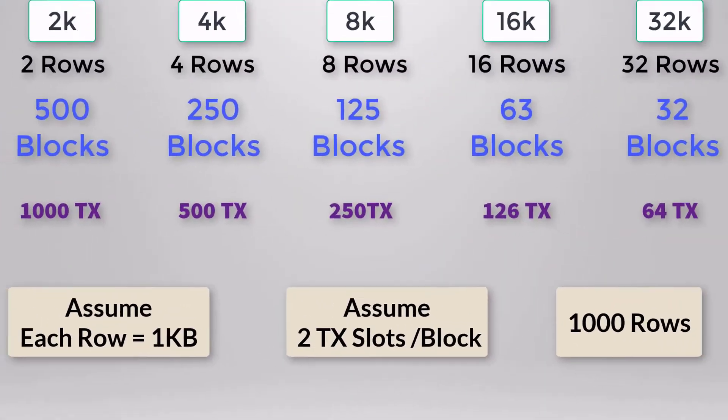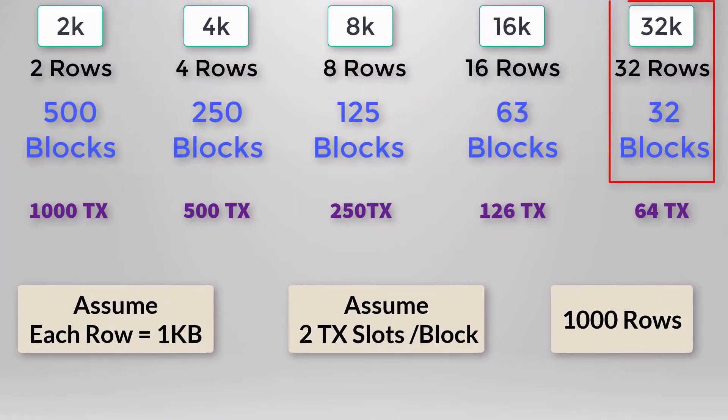On the other hand, if you're doing querying or reporting, you want to fetch as much data as possible per block read. With a 32K block, reading one block gives you 32 rows, and you can read the entire table by reading just 32 blocks. The number of IO operations needed is only 32. With 2K blocks, you'd need to read 500 blocks — though the total data is the same, the number of IO operations is much higher.